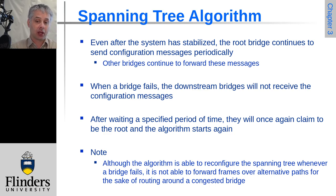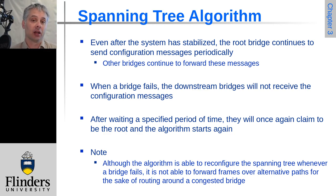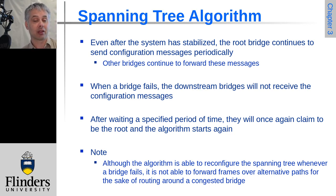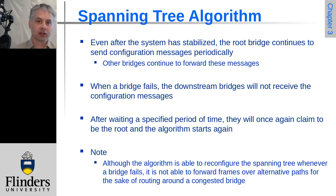Back to spanning tree: even after the system has stabilized and message traffic has been blocked for non-active bridges, the root bridge will still send out periodic configuration messages, which get repeated by the bridges. All bridges listen for these, and if they don't hear one within a prescribed timeout, they assume one or more links along the path have failed and start the negotiation process again.